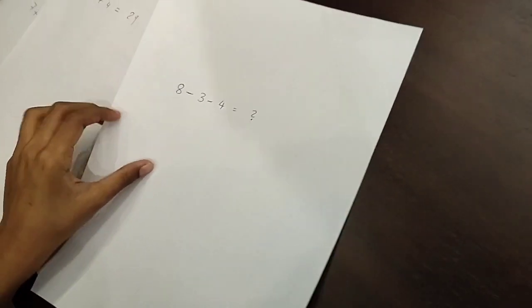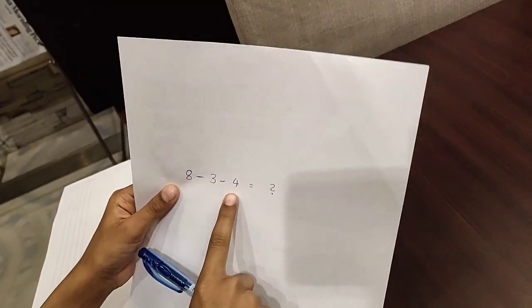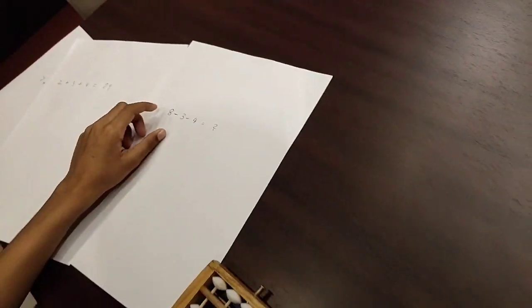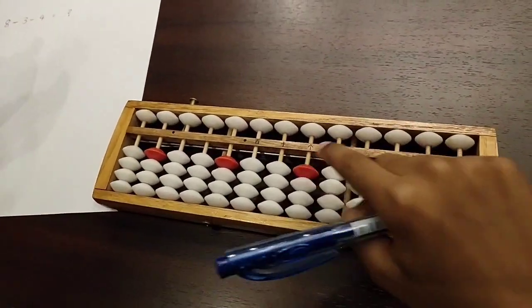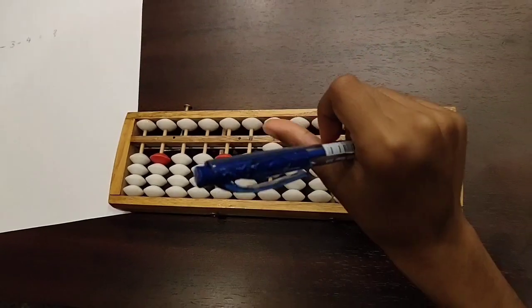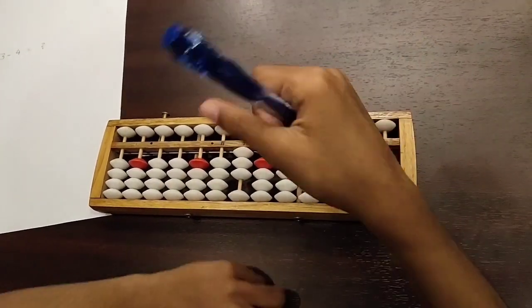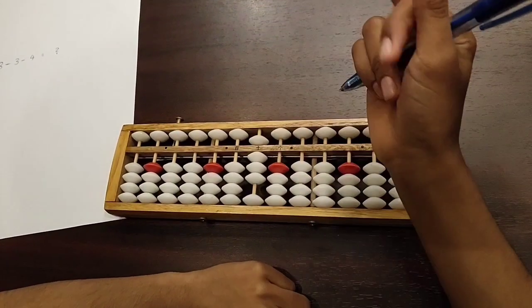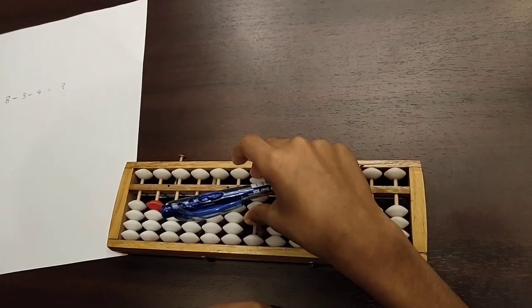Okay. Now the next sum. The next sum is 8 minus 3 minus 4. So first how to put 8? You have to first put 3 beads up below the rod with your thumb finger, and then the top bead down with your middle finger, which represents 8 now.